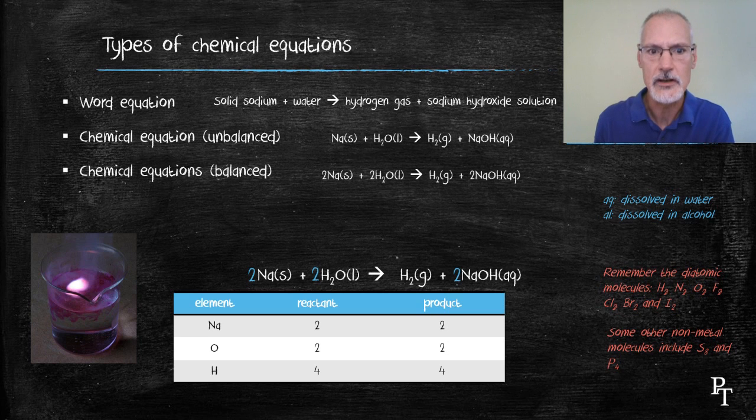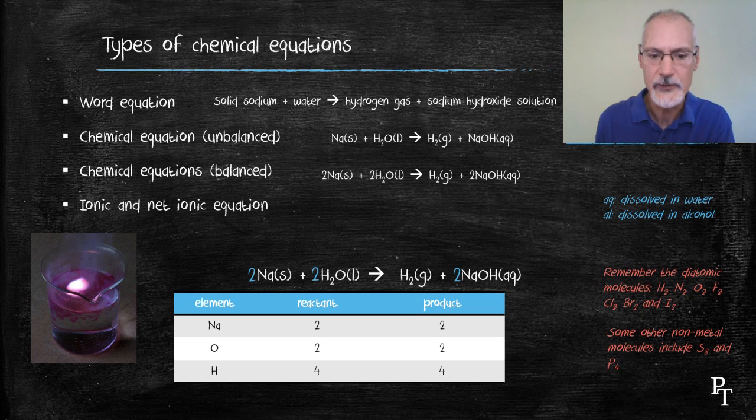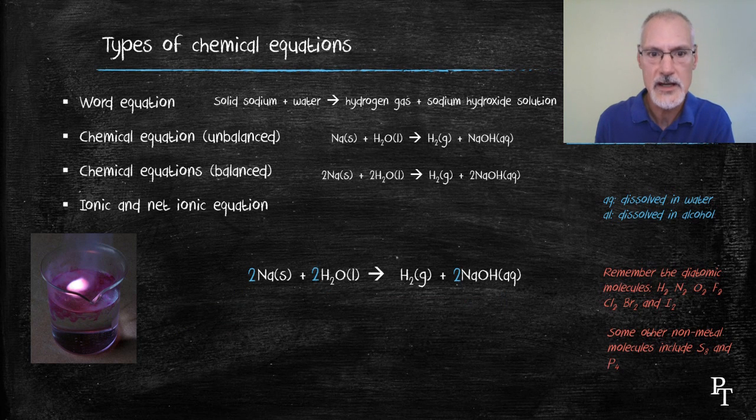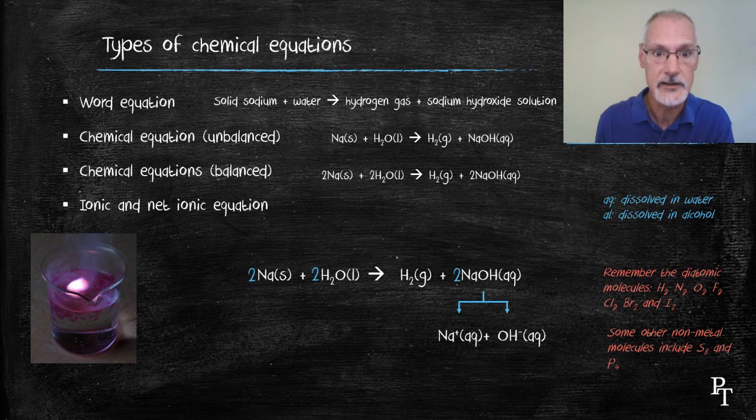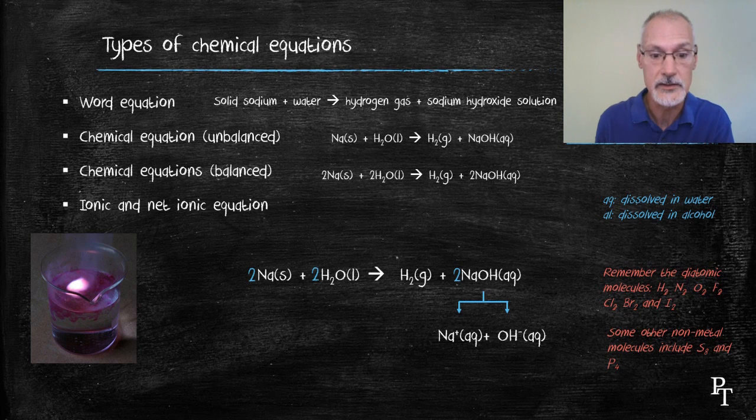I now want to introduce something called an ionic equation. In an ionic equation, any substance which is aqueous is broken down into its ions. All the other species are left unchanged. So sodium hydroxide would break into a sodium ion and a hydroxide ion, one of each.